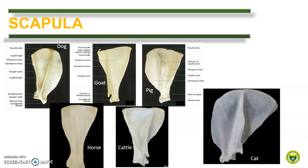In dogs, the scapular spine divides the lateral surface into two equal fossae. The scapular spine has a distinct acromion but lacks the trapezious tubercle. The trapezious tubercle is present at the scapular spine of pig and horse as well as in large ruminants. It is very distinct in the pig scapula.